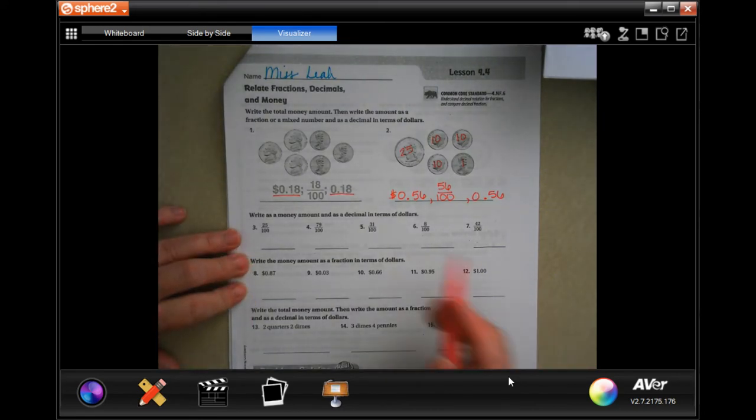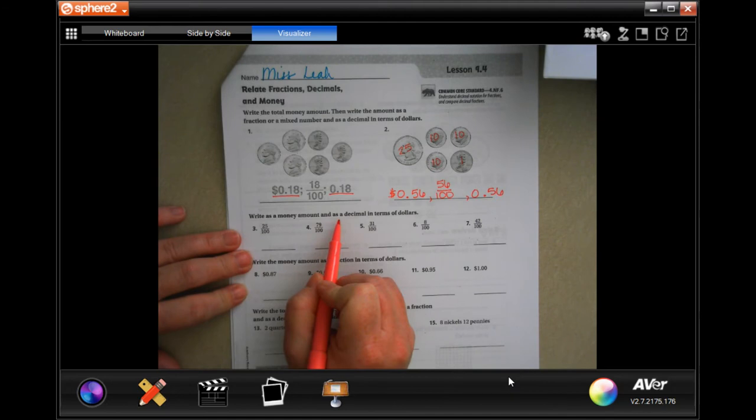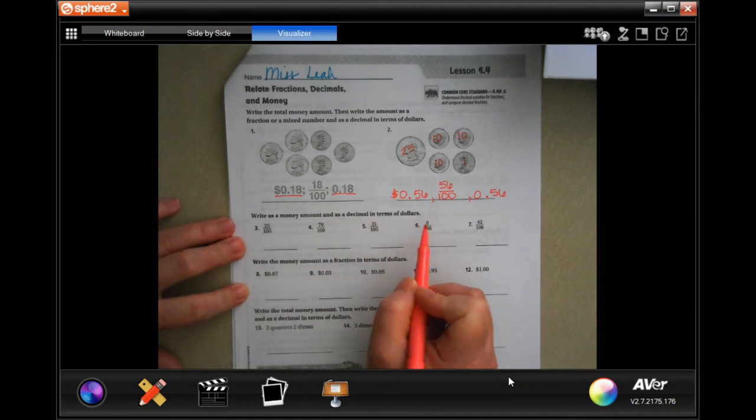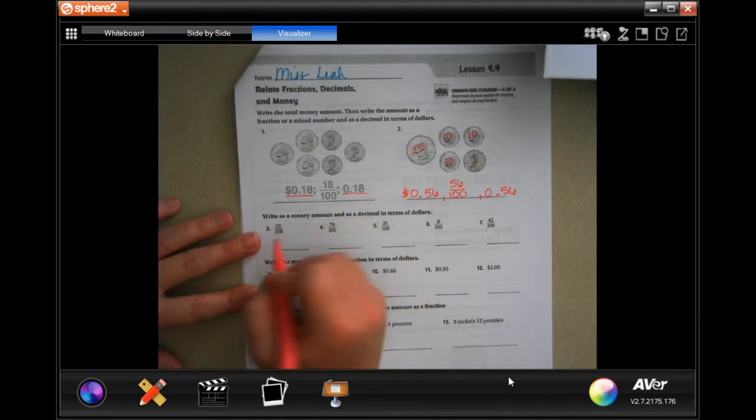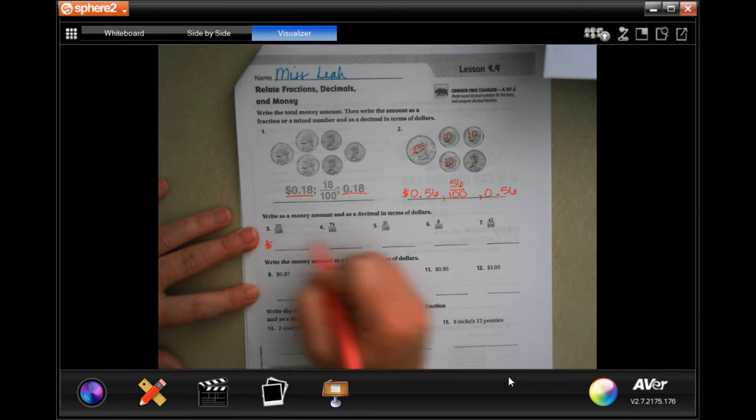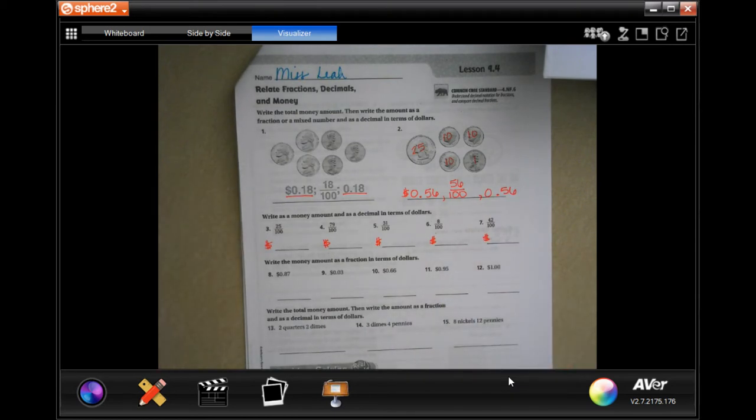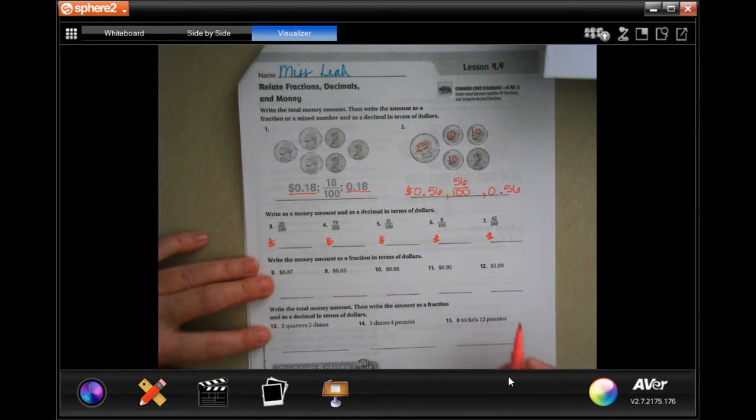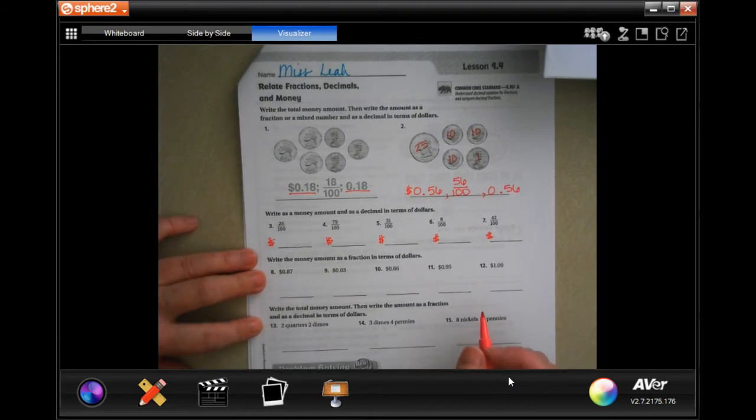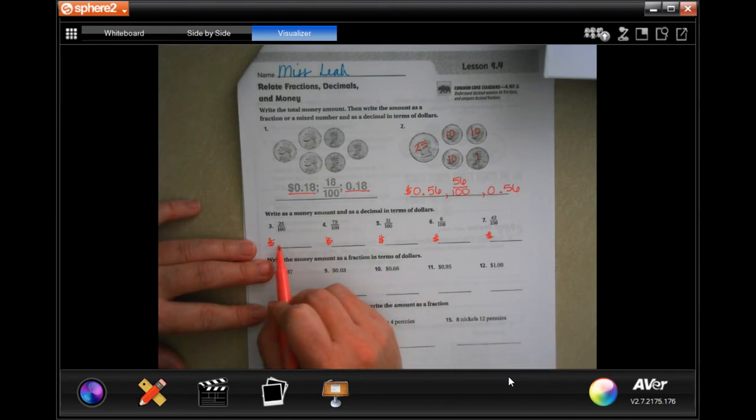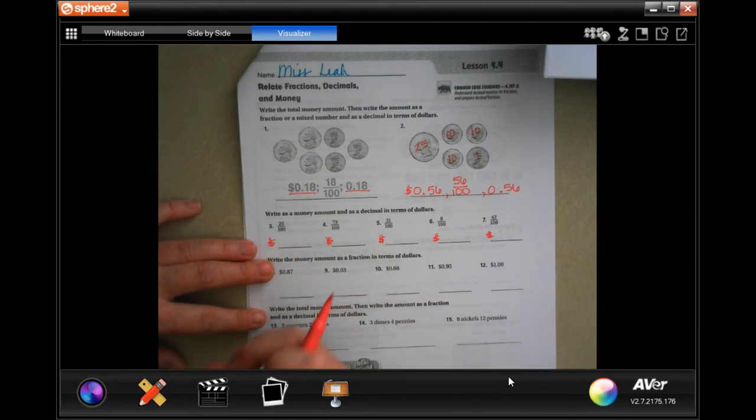It promises, it's not that bad, y'all. Right? As a money amount and as a decimal in terms of dollars. So, whatever it is, we're going to start with a dollar sign. Every single one of them is going to start with a dollar sign. And all they're trying to do is have you see that the decimal and the dollar amount are exactly the same, just with a dollar sign in front of it.